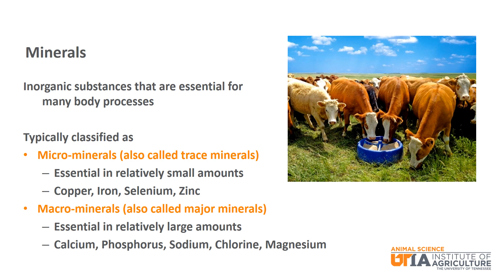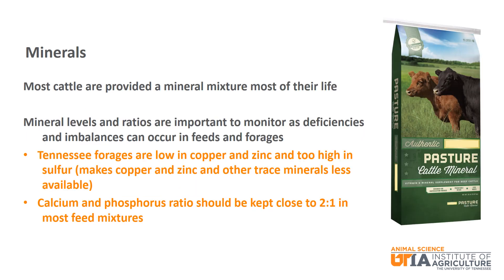Calcium and phosphorus are two minerals most often included on feed labels. Most cattle are provided a mineral mixture during most of their life. It is important to monitor mineral levels and ratios as deficiencies and imbalances can occur depending on the feed or forage provided. For example, most forages in Tennessee are low in copper and zinc while being too high in sulfur. Excess sulfur in a feed or forage can make copper, zinc, and other trace minerals less available to the animal. One important note about copper: levels commonly fed to beef cattle will kill sheep, so if you have cattle and sheep on your farm, keep sheep away from the cattle mineral. Additionally, the calcium to phosphorus ratio should be kept approximately two to one.